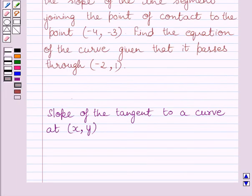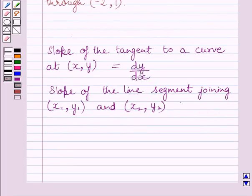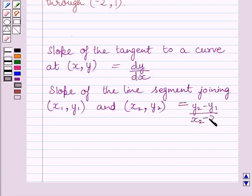First of all, let us understand that slope of the tangent to a curve at point xy is equal to dy upon dx. Also, slope of the line segment joining the points x1, y1 and x2, y2 is equal to y2 minus y1 upon x2 minus x1. This is the key idea to solve the given question.